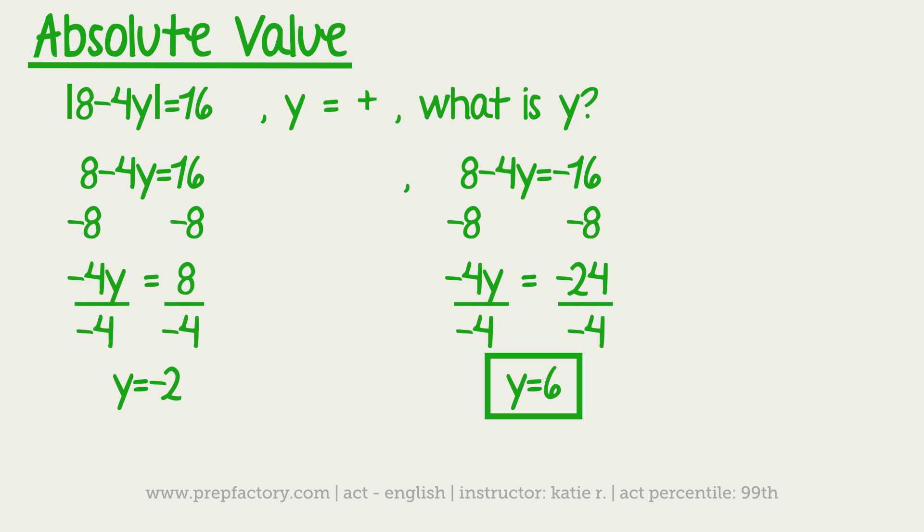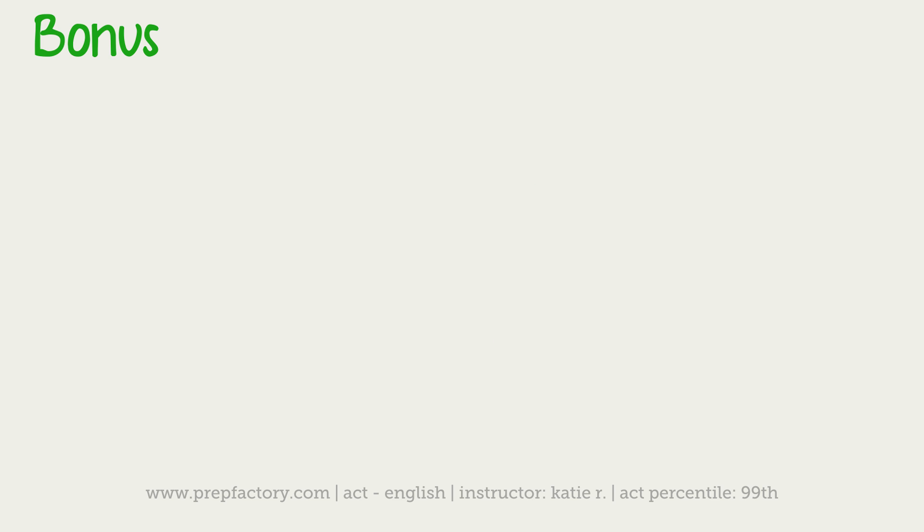So in this case, your answer would be 6. So any time that they give you an absolute value like this one, they're going to have to specify that your variable is positive, negative, or something else odd even, for instance, so that you know which one of your answers you can pick. Because if this was just a normal math test, negative 2 and 6 would both be equally correct.